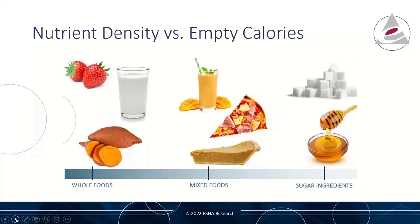Here you can see examples of various types of foods that all contain some form of sugars. On the left are whole foods that contain all naturally occurring sugars as part of the complete nutrient profile. On the right, you see sugar ingredients like white sugar and honey, whose sugars are considered added sugars. In the middle, we have foods that contain a combination of naturally occurring sugars and added sugars — this middle section requires the most attention regarding declaration of added sugars.